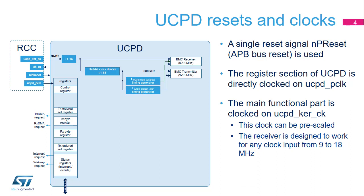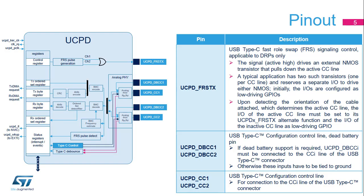The UCPD module asserts CLK RQ to the RCC in order to exit a clock gating low power state. This slide describes the pinout of the UCPD unit. Pins UCPD CC1 and UCPD CC2 are the only signals to be routed to the USB Type-C receptacle. Note that the cable contains a unique CC signal connected to either CC1 or CC2 in the receptacle because the cable can be flipped.